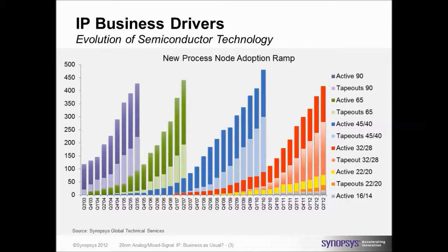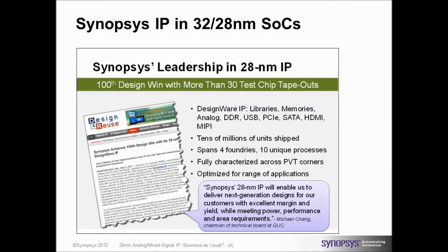Moving forward, you can see in red the 28nm node. Up to 28nm things were pretty consistent. We started doing our development for USB 2.0 in 28nm in Q1 of 2009, taped it out about six or seven months later. Life was difficult but still very reasonable for our engineers. In the time that followed we developed a lot of IP for the 28 nanometer node - there are about 30 test chips we have taped out ourselves at Synopsys with 28 nanometer IP on it, covering DDR, USB, PCI Express, analog IP, embedded memories, standard cells, and more.